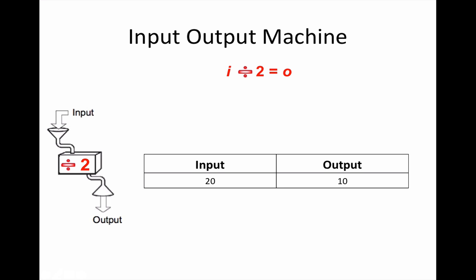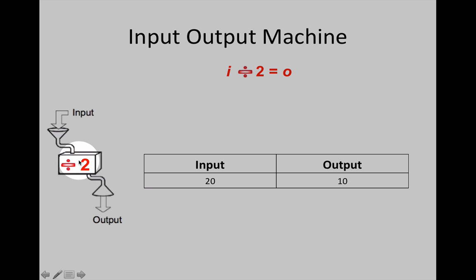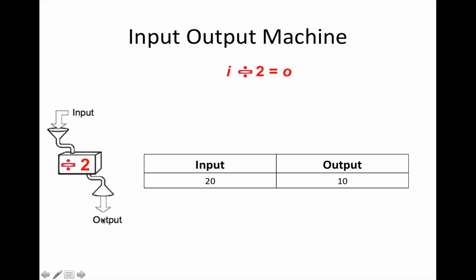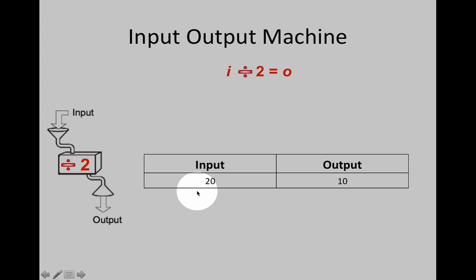Look at this input output machine. What is different about it? Any number that is put into the input machine is divided by two to get the output. For example, there are two children in a family. When candy or allowance or snacks are given to two children, they're divided evenly between the two of them. If there are 20 pretzels divided by two children, each child would get 10 pretzels.